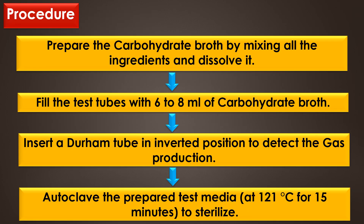Procedure. Prepare the carbohydrate broth by mixing all the ingredients and dissolving them. Fill the test tubes with 6 to 8 ml of carbohydrate broth and insert a Durham's tube in an inverted position to detect gas production. After that, autoclave the prepared test media at 121 degrees Celsius for 50 minutes to sterilize. Do not overheat the carbohydrate fermentation broth, as overheating will result in breaking down of the molecules, particularly the pH indicator, and form compounds with a characteristic color and flavor. This process is known as caramelization of sugar or browning of the sugar.